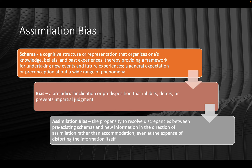Assimilation bias is another topic in critical thinking. To understand it, we first need to discuss schemas. Schemas are a cognitive structure that organizes one's knowledge, beliefs, and past experiences, providing a framework for undertaking new events. Essentially, it's a general expectation or preconception about a wide range of phenomena. One of the most fundamental human psychological activities is our propensity to categorize things — people, objects, places, events, concepts, feelings, and memories — and place them into mental representations called schemas.